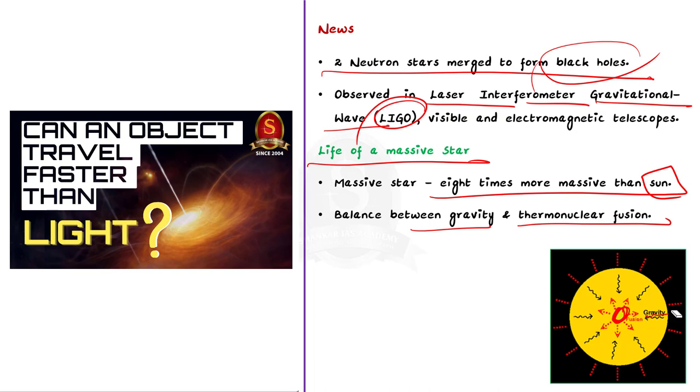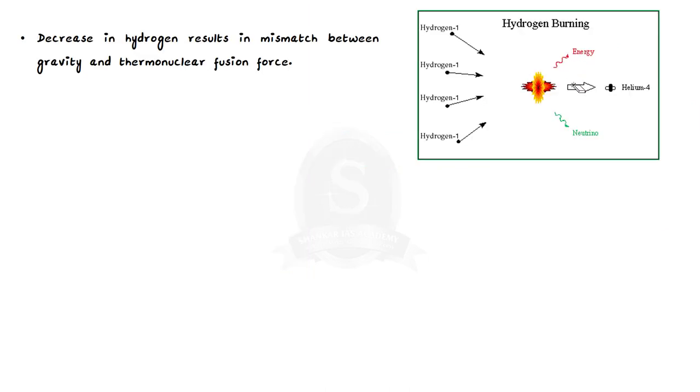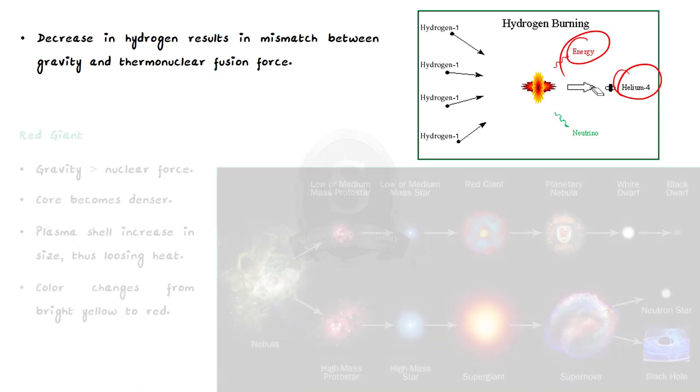The thermonuclear fusion process is one in which two hydrogen atoms merge to create helium and release massive amounts of energy. But what happens when the hydrogen in the star's core starts decreasing? Once a star's core runs out of hydrogen, the state of equilibrium is lost.